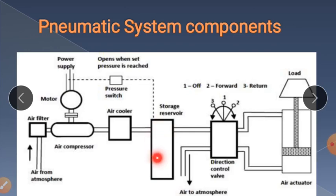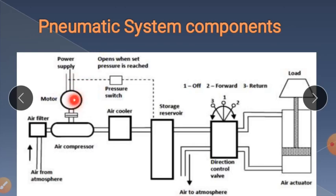After cooling, the compressed air is transmitted to a storage reservoir — similar to the gas cylinder at home, where high-pressure gas is stored. If the storage reservoir reaches the limiting pressure, it sends a signal to the motor to stop compression. When pressure drops below the limit, the signal actuates the motor again to compress and supply more air to the storage.